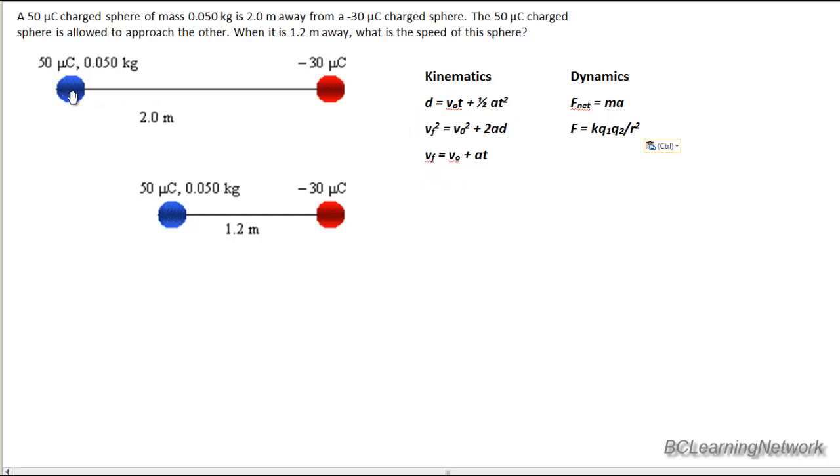We assume it's initially at rest, so V0 is zero. We're trying to find V final, and the distance over which that force acts is 2 minus 1.2 meters, so 0.8 meters, and they plug it all in, and they get an answer, but unfortunately, it's wrong.